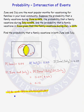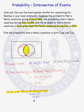Using this equation, we can always find the probability of the intersection of two events A and B. When A and B are independent, the conditional probability becomes simply P(A), giving us P(A∩B) = P(A) × P(B).